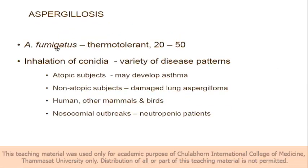Aspergillus fumigatus is a thermotolerant microbe. It can be found in birds. We can differentiate aspergillus fumigatus easily — incubate at 45°C, and if it can grow, it may be the fumigatus complex. Inhalation of conidia goes into the lung and forms a ball — aspergilloma. In neutropenic patients, the spores inside can invade further, producing invasive septate hyphae.